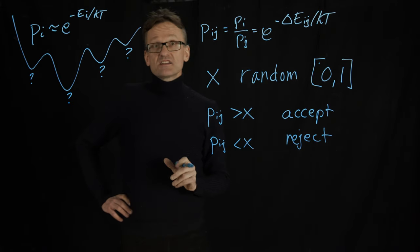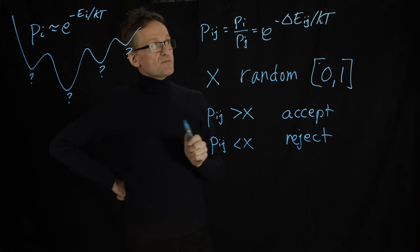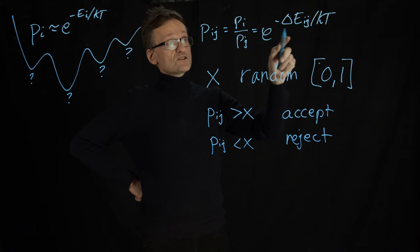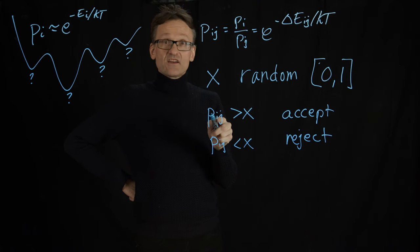But note that x is random, so we don't know, x is between 0 and 1. Does this make sense? Yes. If the energy difference from j to i was negative, this is going to be positive, then Pij is greater than 1. Well, x can only be 1, then you would always accept it.